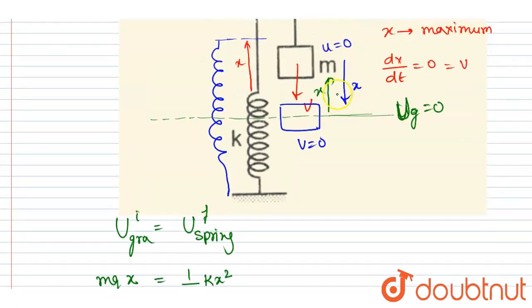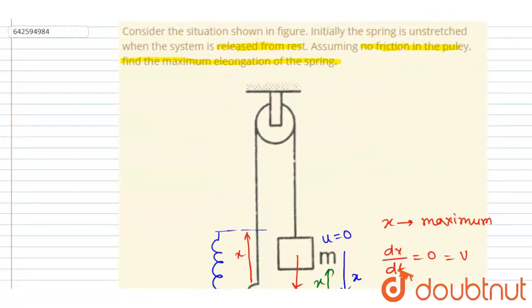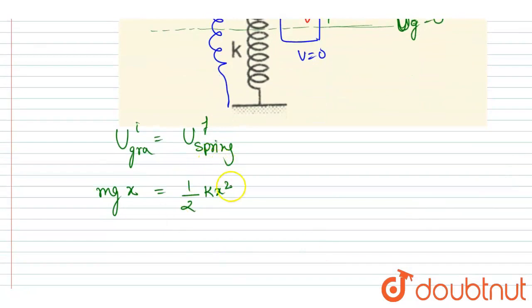When the block comes x downward, the extension in the spring will be x. We have to find the maximum elongation, this x value. So you can cancel x common and you will get x equals 2mg/k, and this will be your answer for maximum elongation.